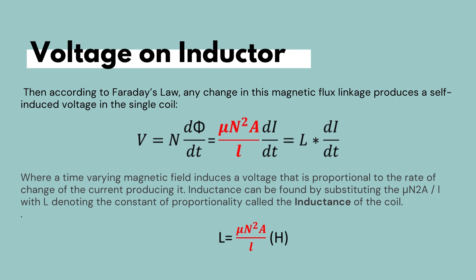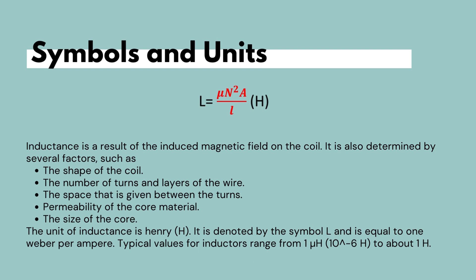Inductance can be found by substituting the permeability times N squared times A over the length with L. So basically, the inductance is the permeability times the number of turns squared times the cross-sectional area over the length of that inductor. Therefore, the voltage is proportionate to the change in current times the inductance, and hence we've found the inductance, which is the result of the induced magnetic field on the coil.